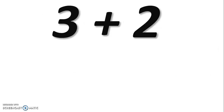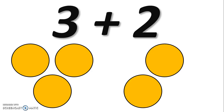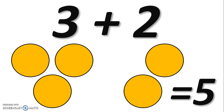Now we're going to take our counter chips and build this first equation: three plus two. Get out your counter chips and lay out three yellow ones to represent positive three, then add two more yellow ones to represent positive two. When you count them all up, they combine to make five — which we already knew, but we're learning how to use the counter chips.